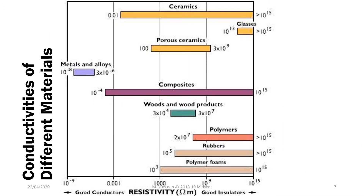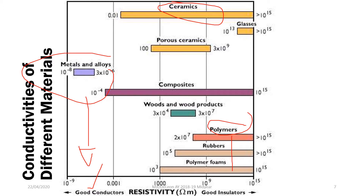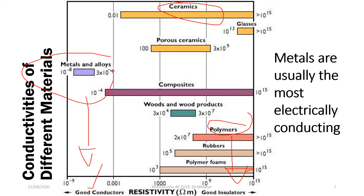Looking at this image, we can see the conductivities of different materials. We can see that metals and alloys usually have the best conduction. Meanwhile, for ceramics and polymers, they are rather good insulators because they do not conduct electricity well. So as a material class, your metals are usually the most electrically conducting, and this can be explained by the type of conduction that each of these materials has.